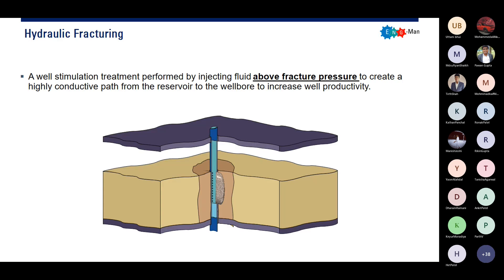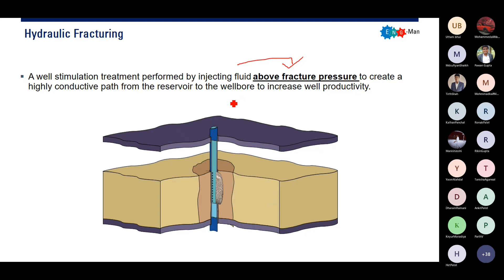First, the introduction. What is hydraulic fracturing? Hydraulic fracturing is a well stimulation treatment performed by injecting — this is important — fluid above fracture pressure, to create a highly conductive path from the reservoir to the wellbore to increase well productivity. So again, we inject fluid above the fracture pressure to create a highly conductive path from the reservoir to the wellbore to increase well productivity.